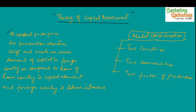The assumptions considered in this model include two country consideration, two commodities consideration, and consideration of two factors of production.